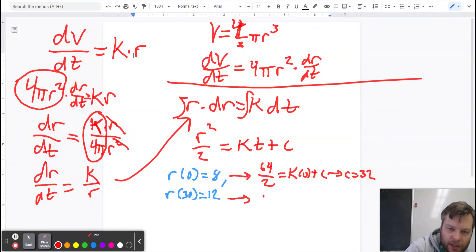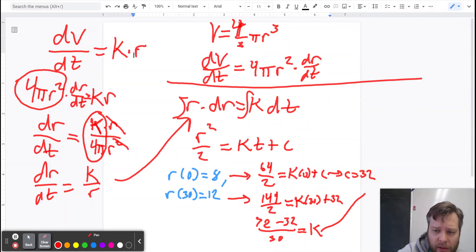And we know that r of 30 is 12. So using r of zero equals eight, I guess eight squared is 64 over two equals k times zero plus c. So we know that c equals 32. r of 30 equals 12, it means 144, 12 squared, 144 over two equals k times 30 plus 32. Let's see. 144 over two is 72. Take away 32, 40 over 30. Divide by 30 to get our k value. So what is that? 40 over 30, four thirds.